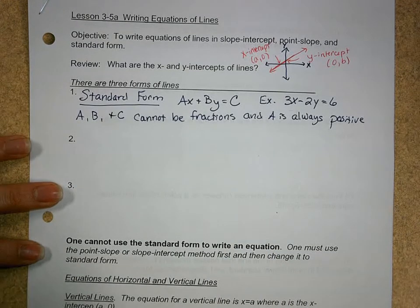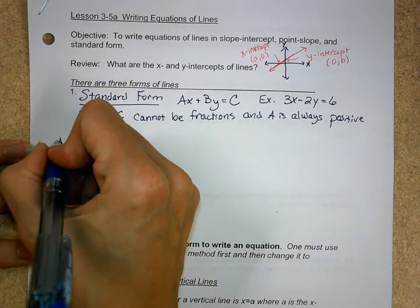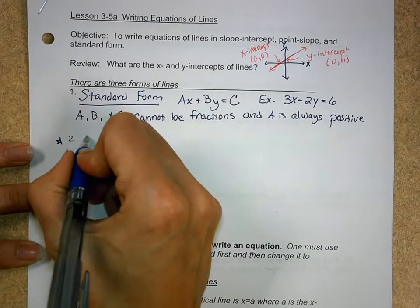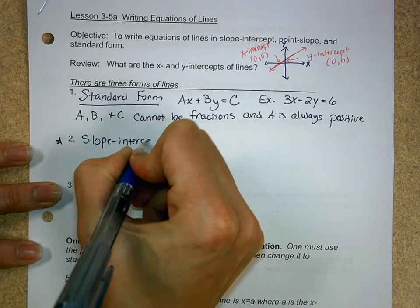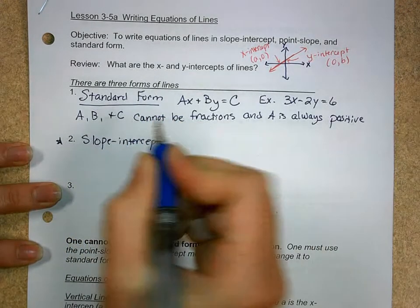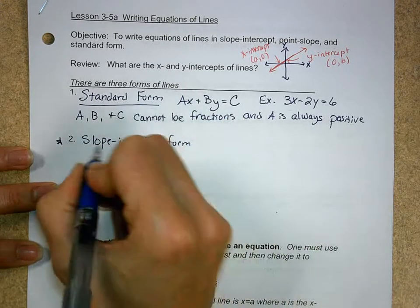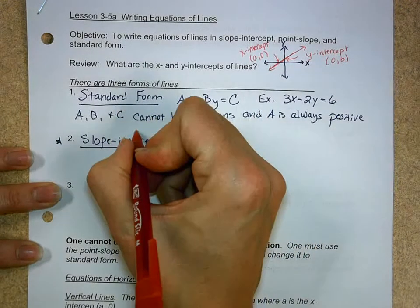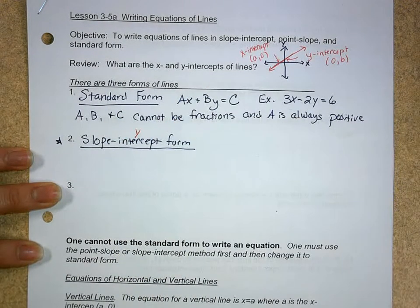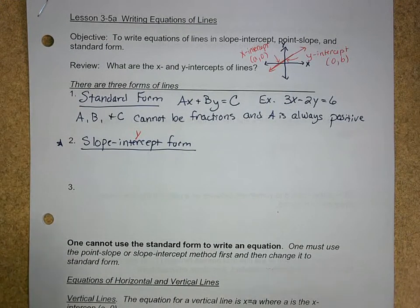Now, the one that you use the most in algebra or pre-algebra is the slope-intercept form. In order to use this one, you have to have a slope of a line and you have to have an intercept. Now, I always say that you should call it the slope y-intercept form because it only works for the y-intercept. It doesn't work for the x-intercepts.